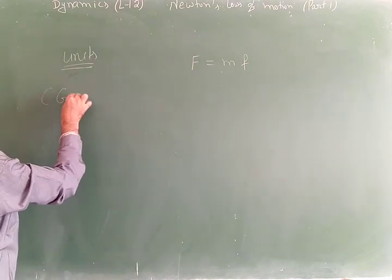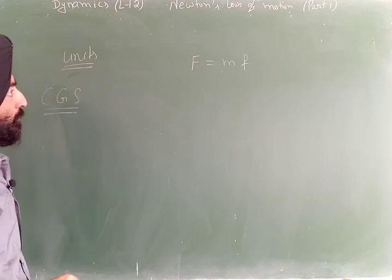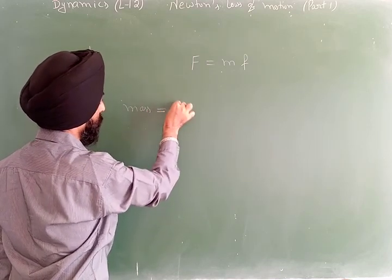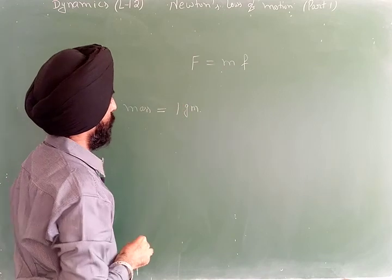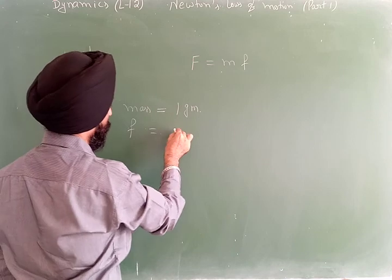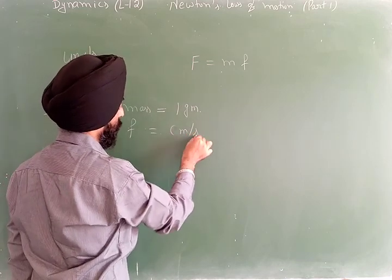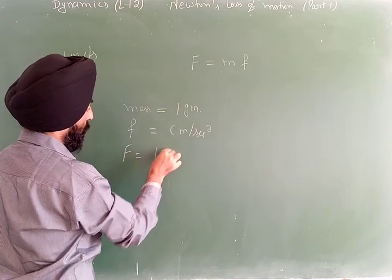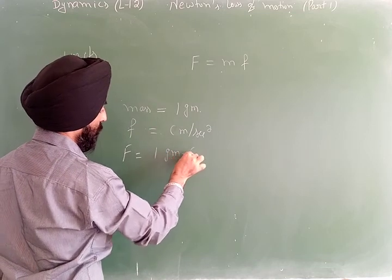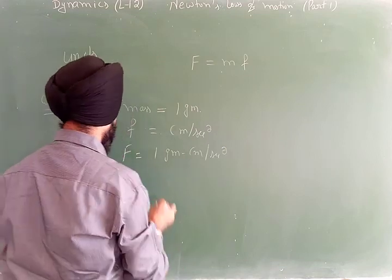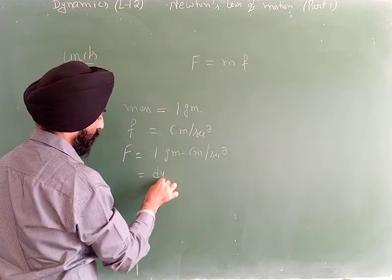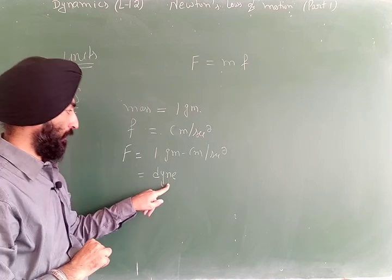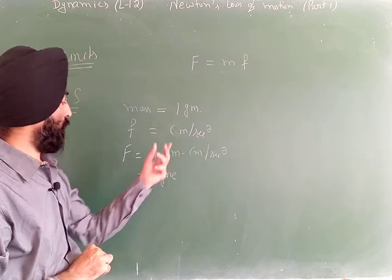Now let's look at the CGS system. In the CGS system, mass is in grams and acceleration is in centimeters per second squared, so force equals 1 gram centimeter per second squared, which is called 1 dyne. The unit of force in the CGS system is the dyne.